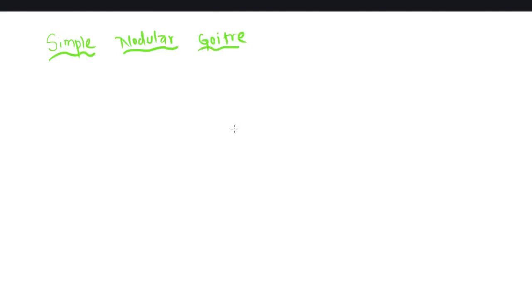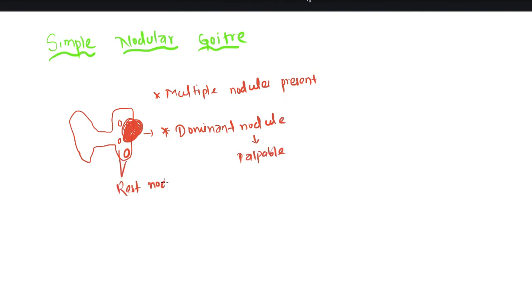Now let's move on to simple nodular goiter. There are multiple nodules present. There is always a dominant nodule which is clinically felt or palpable, and the rest of the nodules are not palpable.